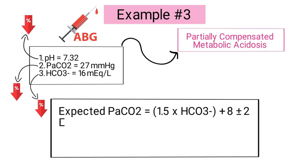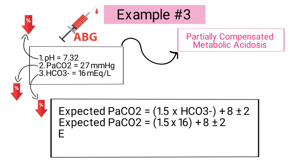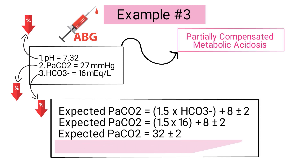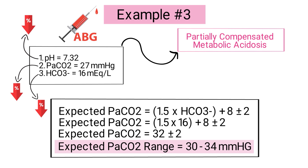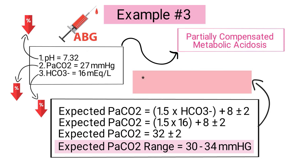Using Winter's formula: expected PaCO2 = 1.5 × 16 + 8 ± 2, which equals 32 ± 2. Therefore, this patient's expected PaCO2 range should be between 30 and 34. The patient's measured PaCO2 of 27 is lower than the expected range, indicating that the patient has primary respiratory alkalosis in addition to metabolic acidosis.